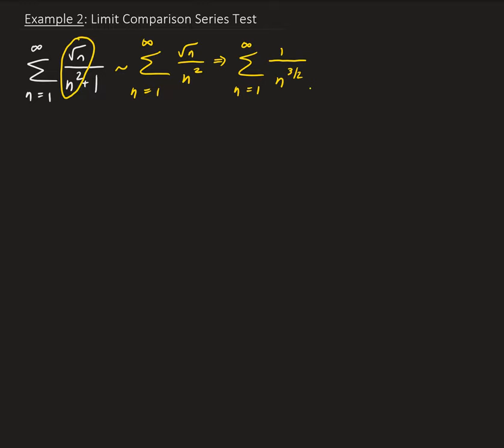So therefore this is a convergent p-series. So this is a p-series where p is equal to three halves, and this is greater than one. So therefore this is converging.